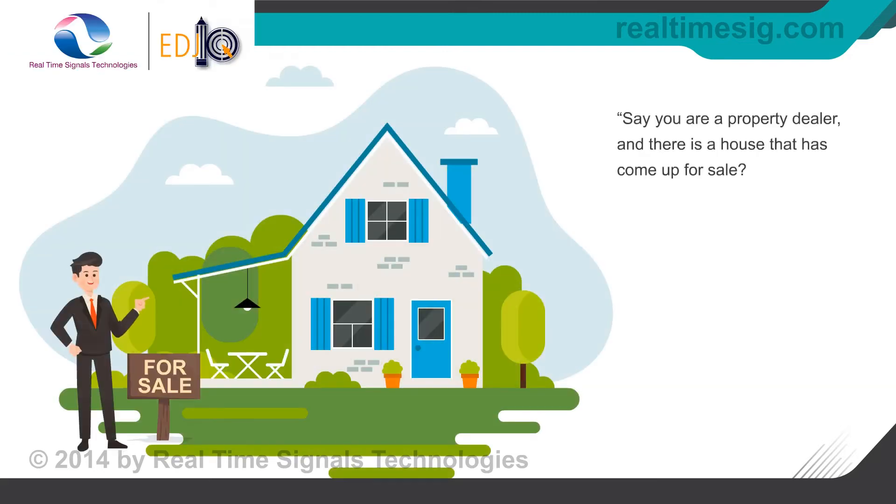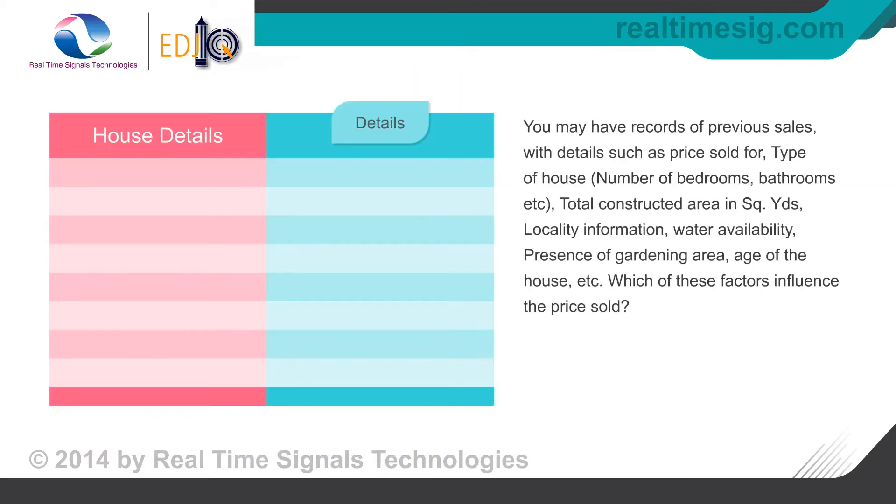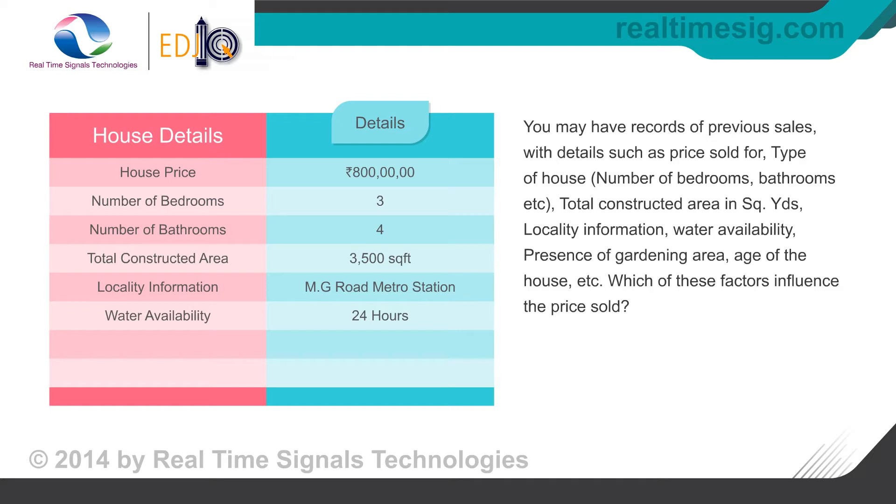Say you're a property dealer and there is a house that has come up for sale. How do you fix or negotiate the price of the house? You may have records of previous sales with details such as price sold for, type of house, number of bedrooms, bathrooms, etc., total constructed area in square yards.